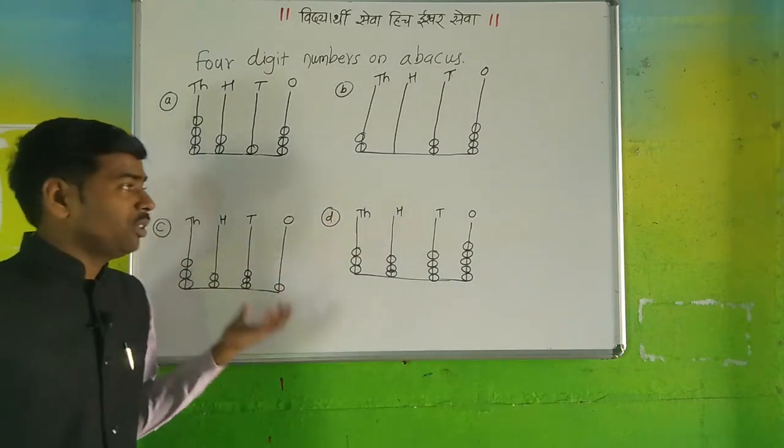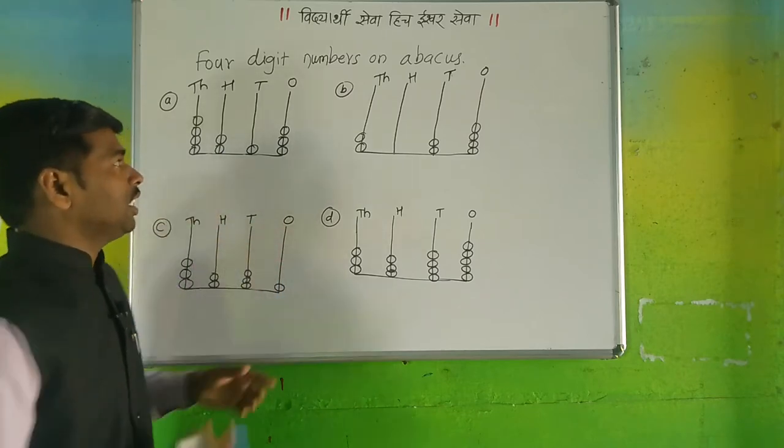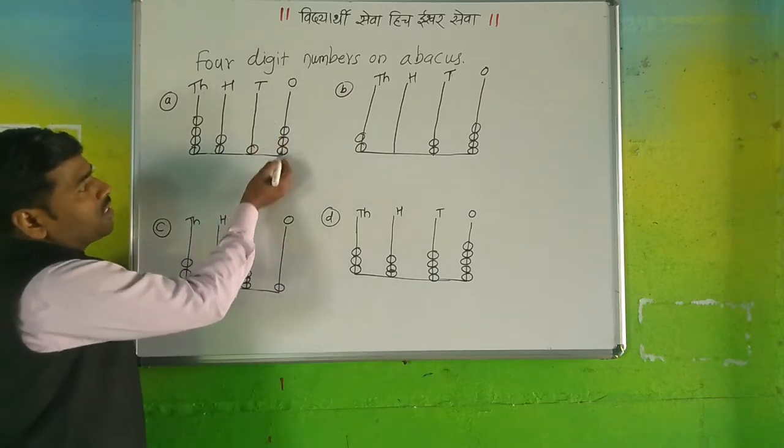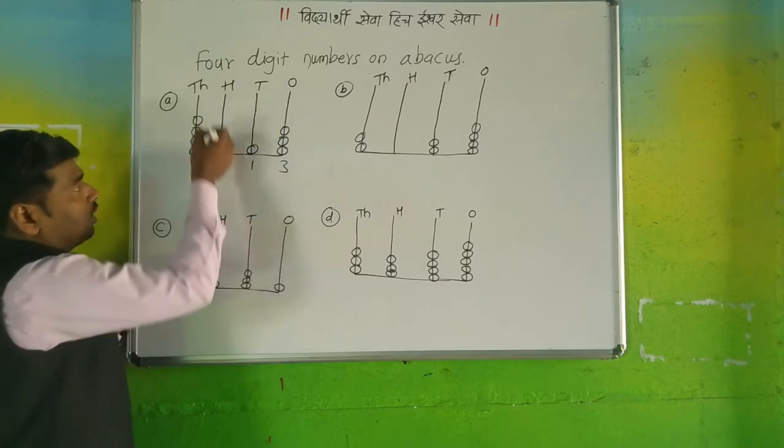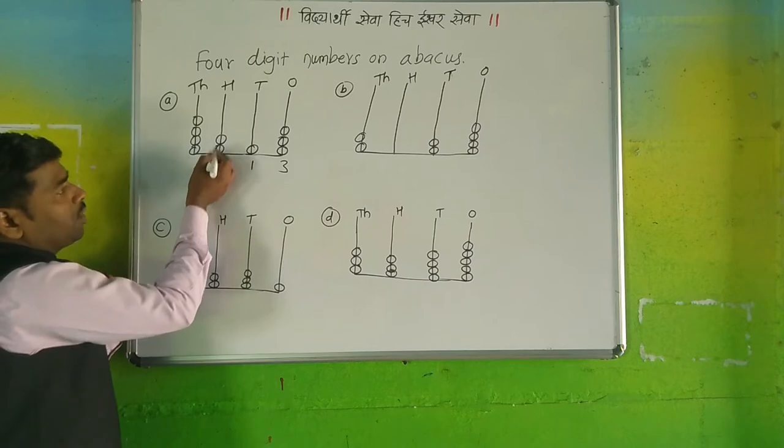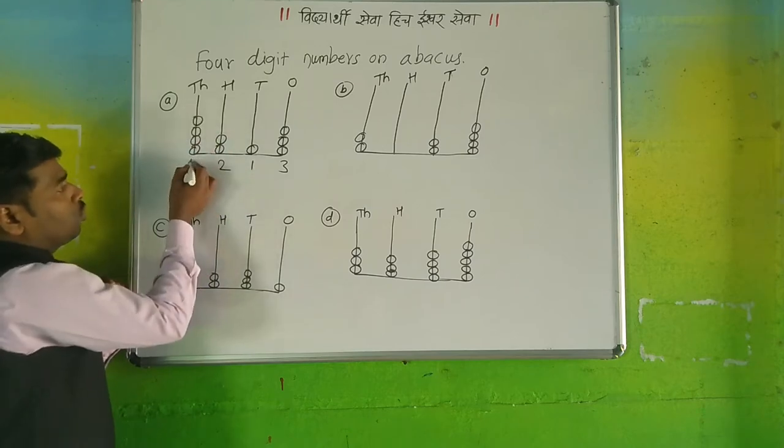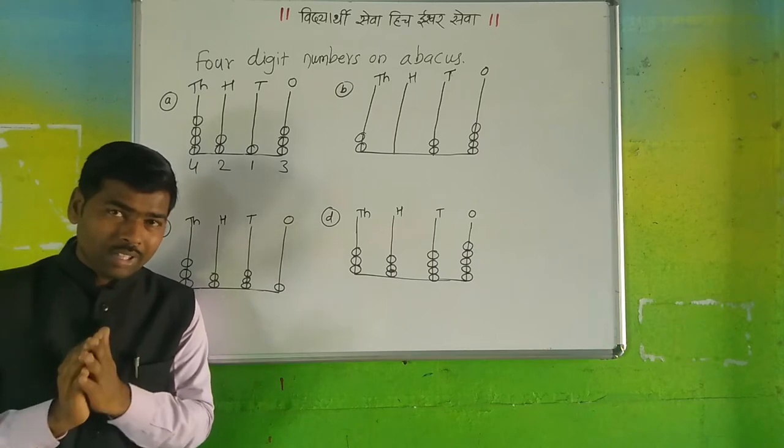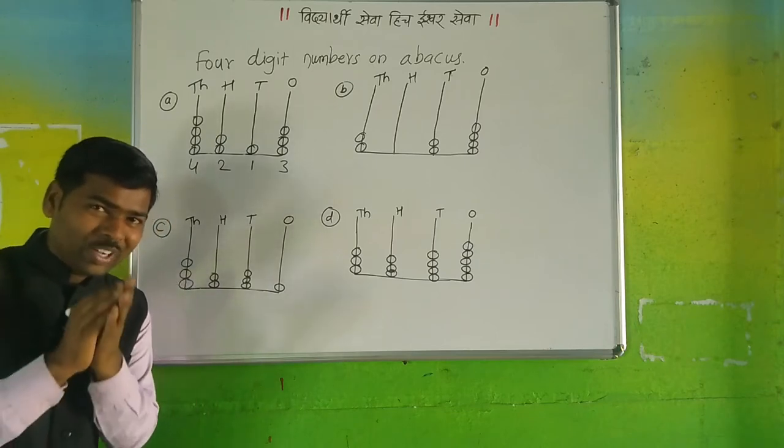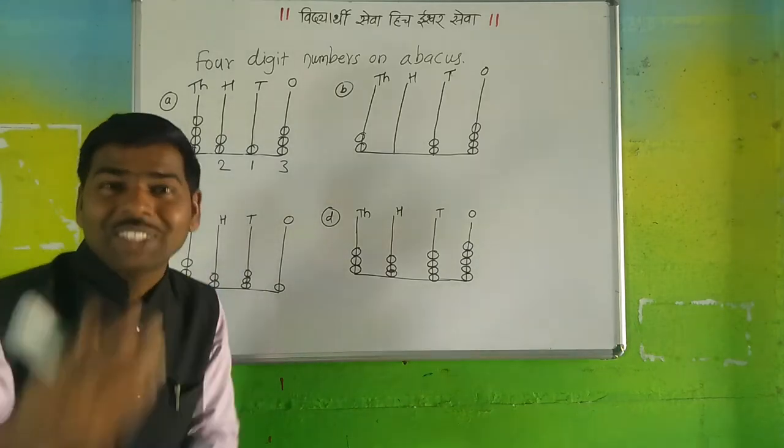See here, first on the ones place there are three beads, that means one, two, three. On the tens place there is one bead. In the hundreds place, two beads. In the thousands place, four beads. Then what is this number? Can you tell me? Oh, you can't tell me because you are in front of the camera and I am inside of the mobile right now.